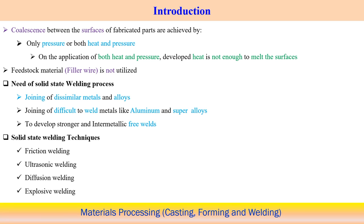We will discuss four types of solid state welding: friction welding, ultrasonic welding, diffusion welding, and explosive welding. The mechanisms and coalescence joining mechanisms are completely different among these four processes. We will discuss each of these four welding processes in further detail.